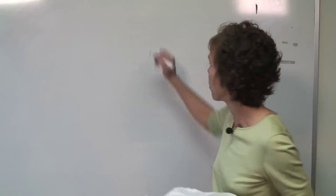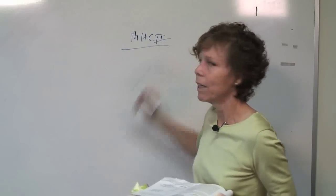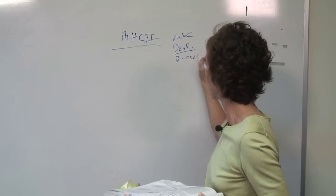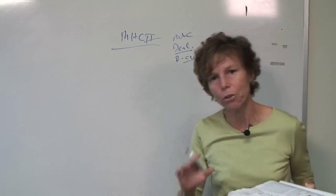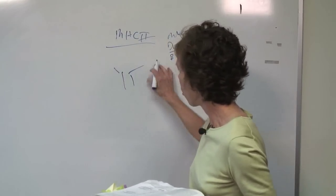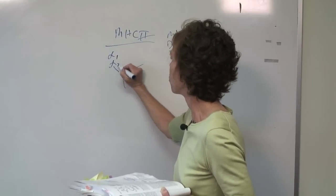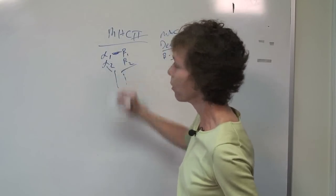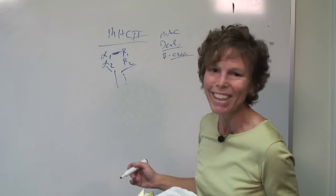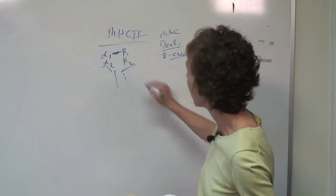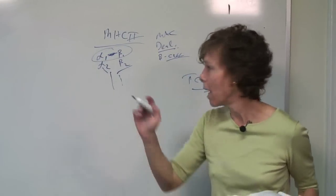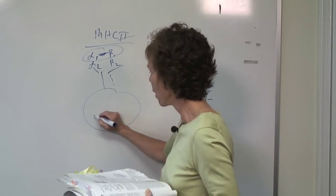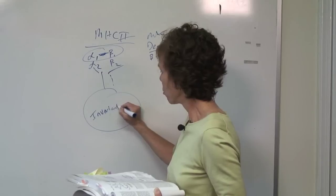MHC class 2 is different. It's found on antigen presenting cells — macrophages, dendritic cells, and B cells. The MHC class 2 molecule has a slightly different structure: it has alpha 1, alpha 2, beta 1, and beta 2 chains, and the antigen is displayed in the alpha 1, beta 1 pocket. Importantly, MHC class 2 does not have TAP1 or TAP2. Instead, it has what's called the invariant chain.